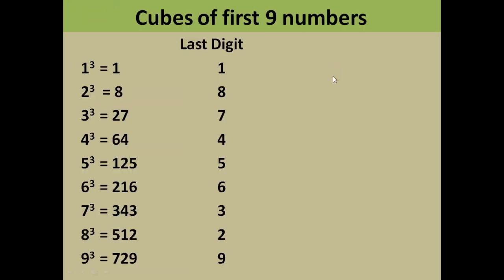The only thing you need to remember is the cubes of the first nine numbers and their last digits. So: one cubed is 1, two cubed is 8, three cubed is 27, four cubed is 64, five cubed is 125, and so on. You need to remember the last digit of each cube as well.